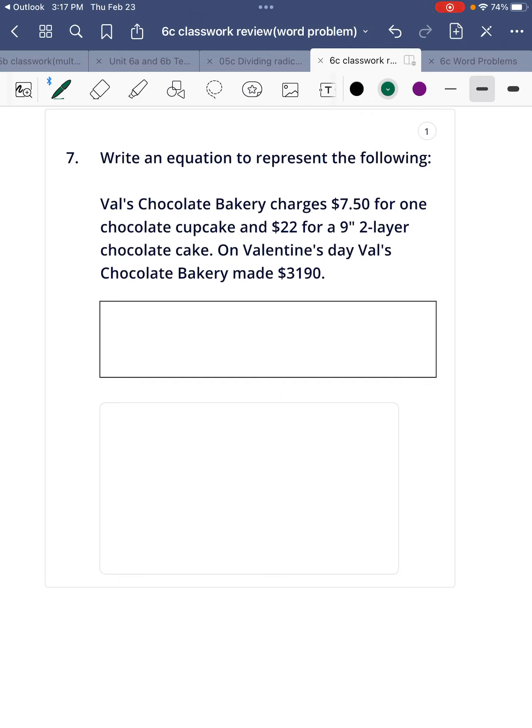Alright. So Val's charging $7.50 for one chocolate cupcake and $22 for a two-layer cake. Val has two different things. We have cupcakes and Val has $22 for a cake. There are two different items being sold, so that is two different variables. We have $7.50 times x. We're going to say x is number of cupcakes.